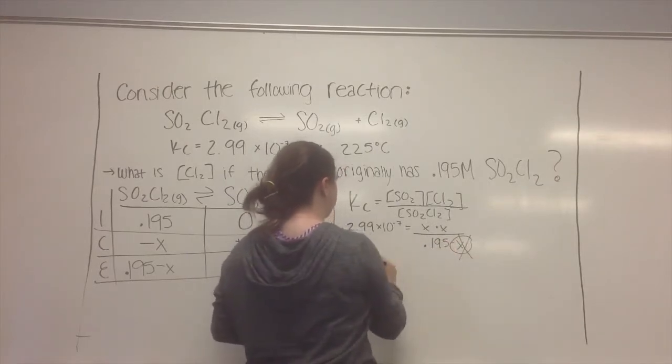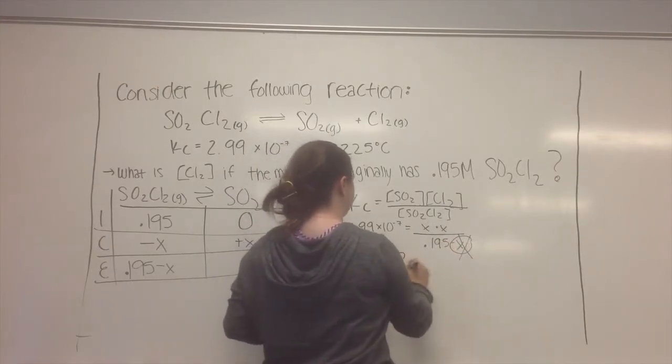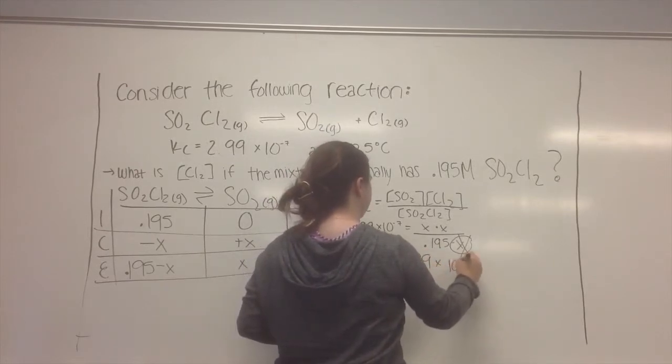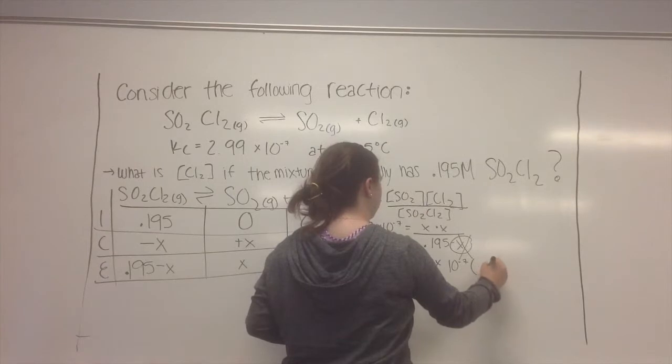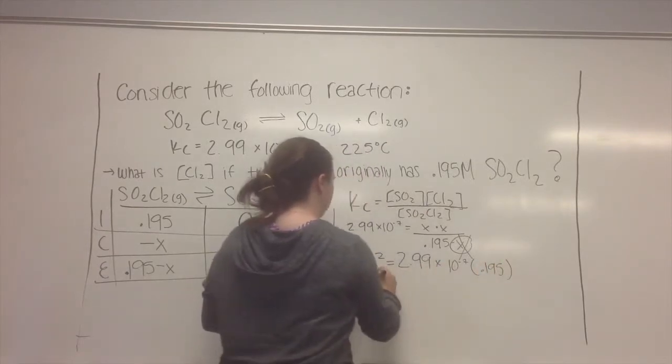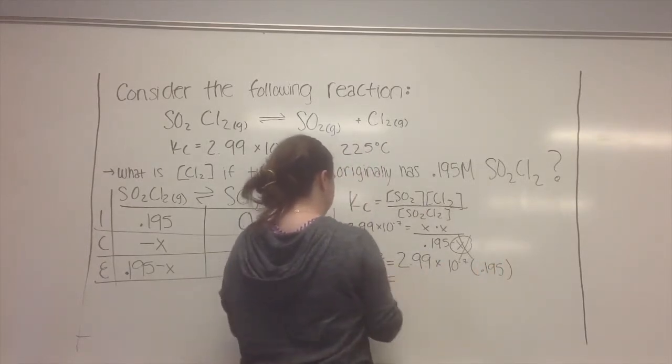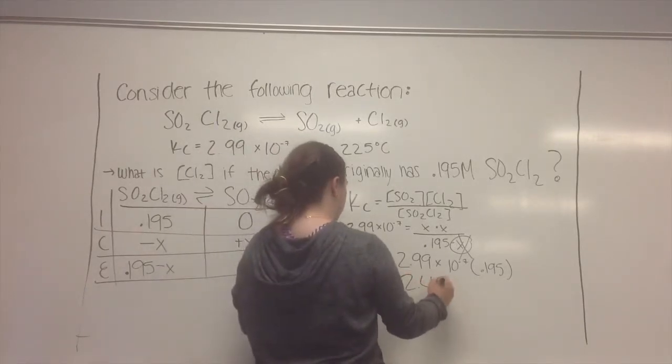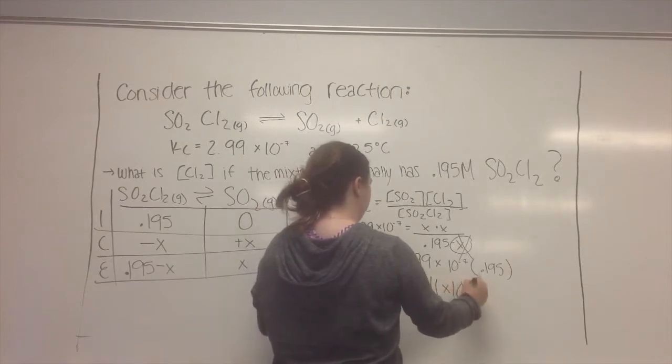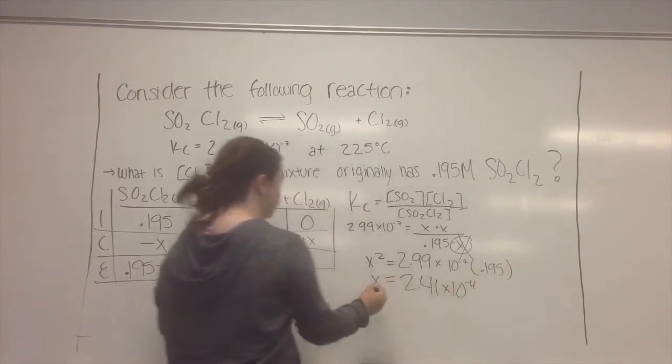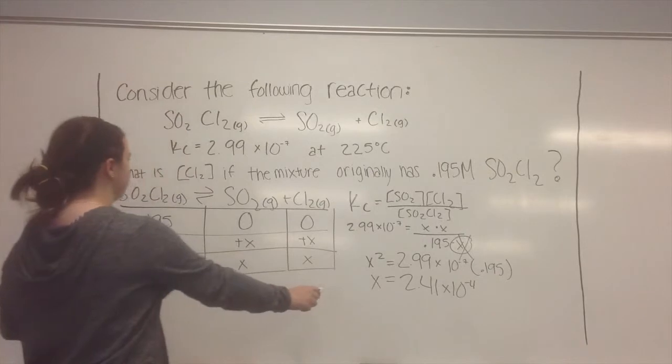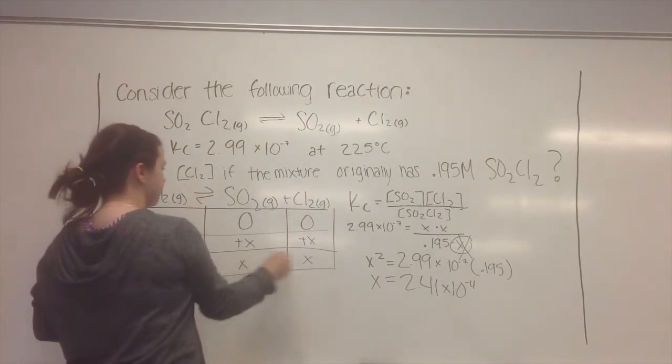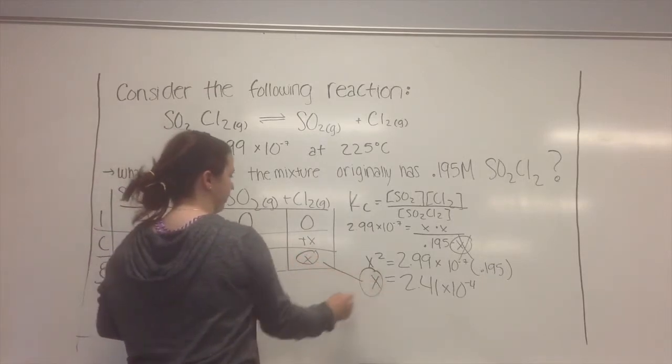Multiply this all. So it will be X squared is equal to 2.99 times 10 to the negative 7 times 0.195, giving that your X will be 2.41 times 10 to the negative 4. That's your X. And the question asks what your concentration of Cl2 is. Since Cl2 right here is just X, that's your answer.